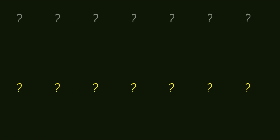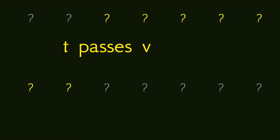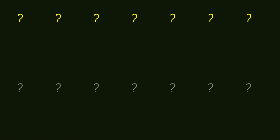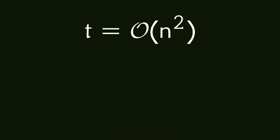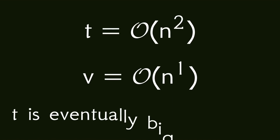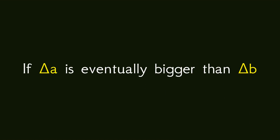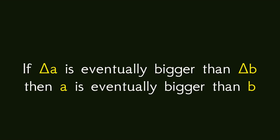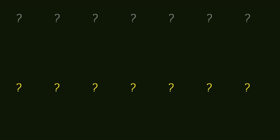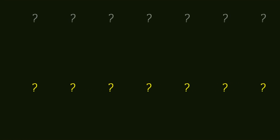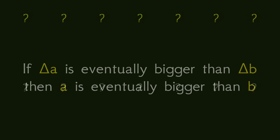And t will continue to increase faster than v, so v will never be able to catch up and pass t. So the sequence t is eventually bigger than the sequence v. What is important here is that t is a polynomial of order 2 while v is a polynomial of order 1. We can generalize this argument to make a very powerful statement: for any increasing sequences a and b, if delta a is eventually bigger than delta b, then a is eventually bigger than b. This is an application of an important mathematical theorem called the Stoltz-Cesaro theorem.